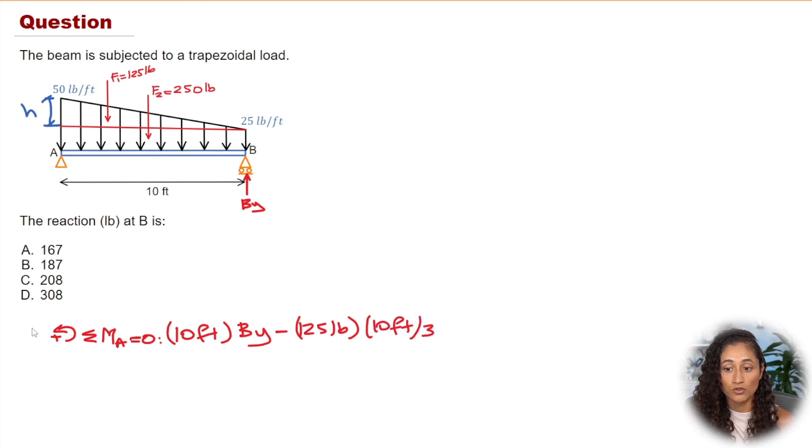So this here is going to be the moment arm. Then we're going to have minus 250 pounds—so this is the force of the rectangle. It's minus because it's going opposite of the moment. And then we're going to multiply by the moment arm. Now the moment arm for this rectangle is going to be just B over two, right, because that's the centroid of the rectangle, so we're going to have 10 over two, which is going to be five feet. Then you're going to equal this equation to zero and then solve for By.